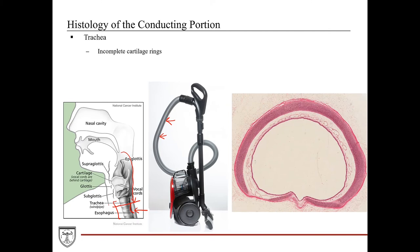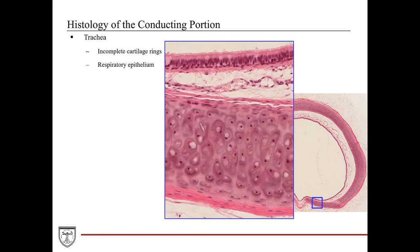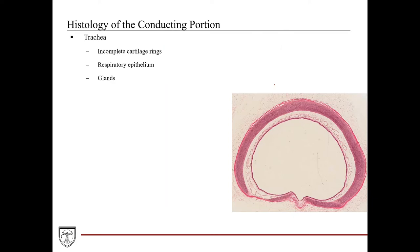A cross-section through the trachea shows the anterior and posterior aspects. The eosinophilic structure in the middle is the hyaline cartilage, which does not form a complete circle — closing that circle is a small bundle of smooth muscles. At higher magnification, the luminal lining is comprised of the respiratory epithelium — the ciliated pseudostratified columnar epithelium with cilia and goblet cells intermixed. Underneath is the lamina propria, and deep to that is the cartilaginous support — hyaline cartilage with its perichondrium.